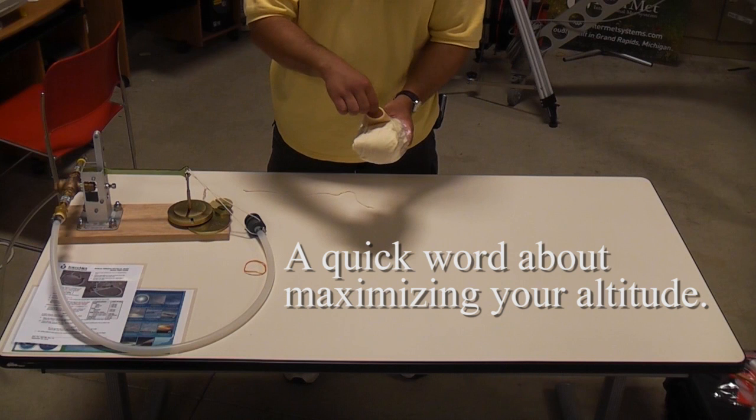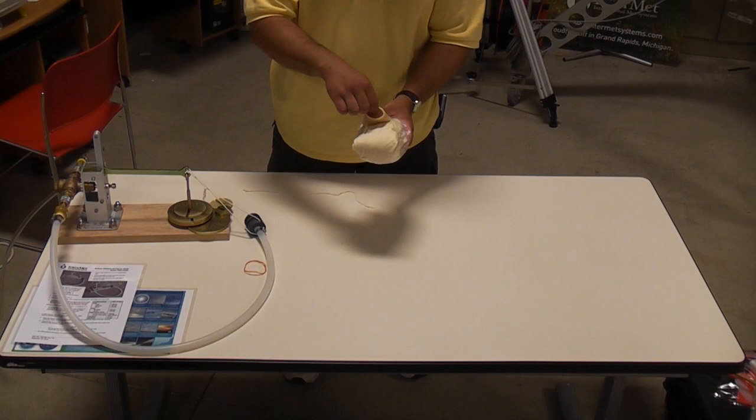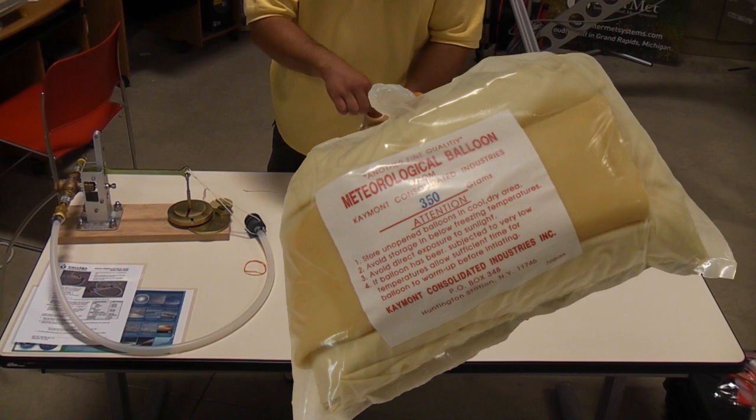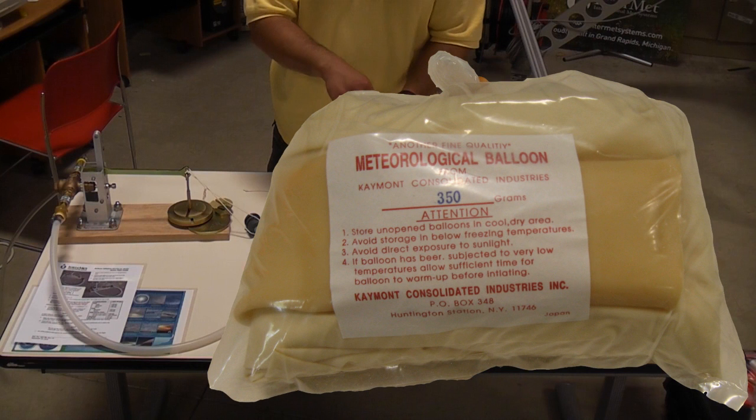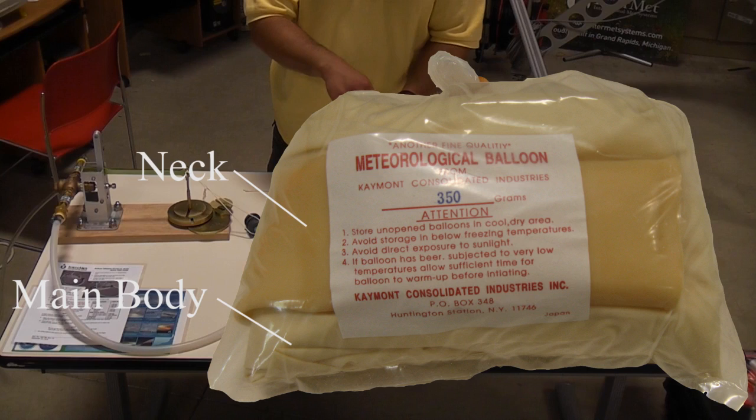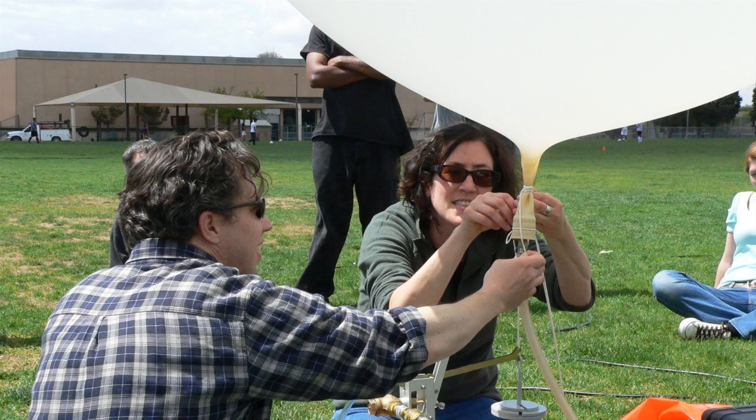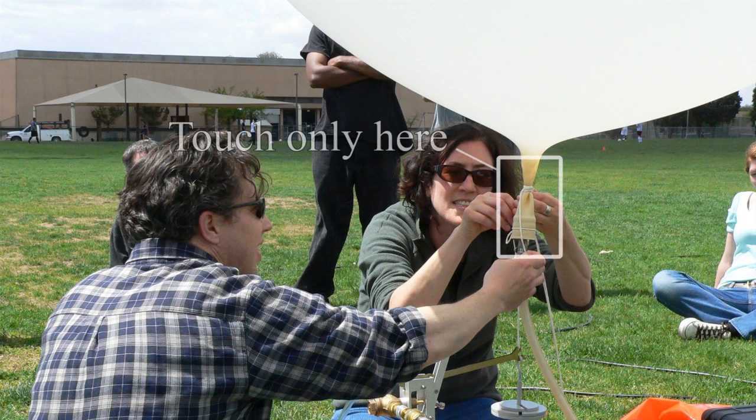If it is important to maximize your balloon burst altitude, it's important to know where the balloon can be touched and where it cannot. The balloon has two major parts, the neck and the main body of the balloon. The neck is significantly thicker than the main body of the balloon and is generally darker in color. The neck is the only part of the balloon I should touch if I care about obtaining the maximum altitude.